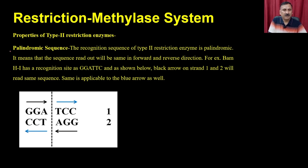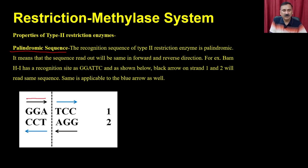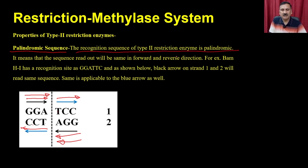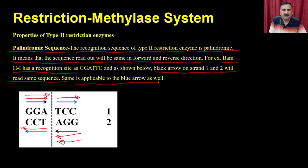Palindromic sequences are sequences that read the same in the forward and reverse direction. For example, the sequence GGATCC — reading from this side gives GGA, and reading from the reverse orientation also gives GGA. The recognition sequences of Type 2 restriction enzymes are palindromic, meaning the sequence readout is the same in forward and reverse directions. For example, BamH1 has a restriction site of GGATCC, and both strands read the same sequence as shown.